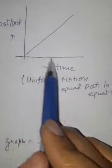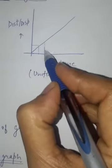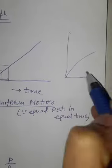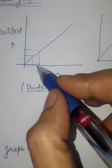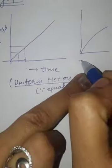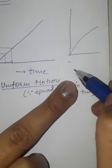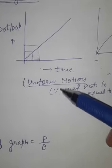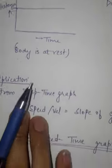If you get a straight line making an angle with the time axis on a distance-time graph, the body covers equal distance in equal intervals of time — that is uniform motion. If the graph is a curve, it is non-uniform motion, meaning unequal distances in equal intervals of time. For example, if in the first 10 seconds the body covers 1 km and in the next 10 seconds it covers 0.5 km, that is non-uniform motion. So: a curve means non-uniform motion, a straight line at an angle means uniform motion, and a straight line parallel to the time axis means the body is at rest.